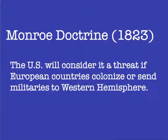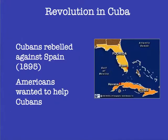A quick review of the Monroe Doctrine from 1823: this was issued as a threat or warning to European countries not to colonize or send militaries to the Western Hemisphere. The United States really didn't have the military to back this threat up, but issued this warning nonetheless. The United States has always been interested in Latin America, Central America, and the Western Hemisphere.